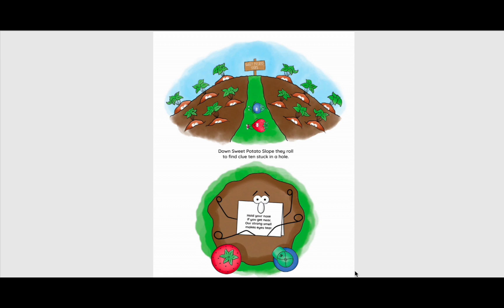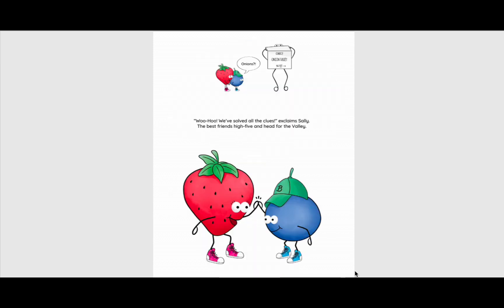Down sweet potato slope they roll to find clue ten stuck in a hole. Hold your nose if you get near. Our strong smell makes eyes tear. Onions. Correct. Onion Valley. Woo-hoo. We've solved all the clues, exclaimed Sally. The best friends high-five and head for the valley.